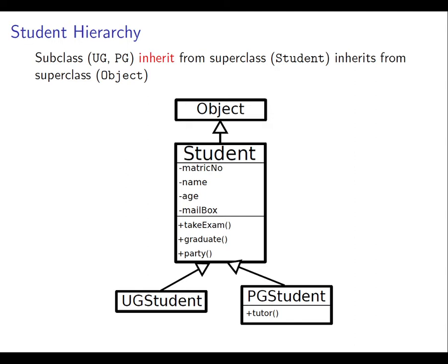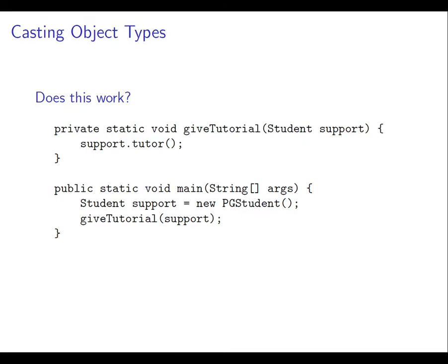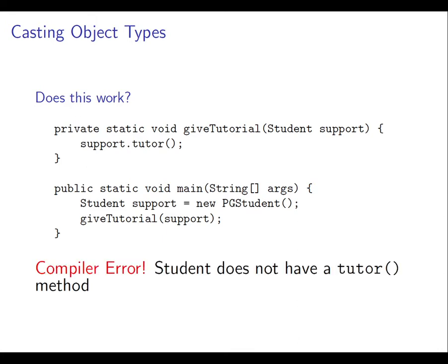Back to the student example for a moment. Let's have a think about this: could we do this? We have a giveTutorial method, it takes an arbitrary student, and then we send the tutor message to that student. We invoke the method like this: we create a new PG student and we send that student to the giveTutorial method. So we've got a student that can in fact tutor, and that's the one we're passing to the giveTutorial method. But it doesn't work. It doesn't work because the promise of the signature of the giveTutorial method is that it's supposed to work for an arbitrary student, and yet the body of that method will not work for an arbitrary student. It will only work for a student that understands the tutor message. There's a mismatch between the supposed type of the parameter, which is Student, and the required type of the parameter, which is PG student. So the compiler will spot that and complain.